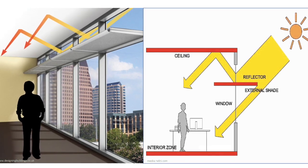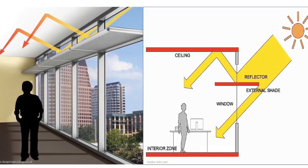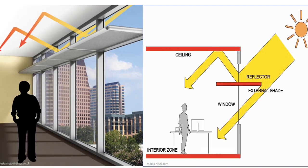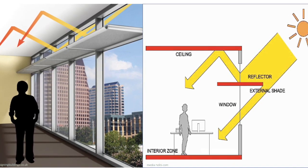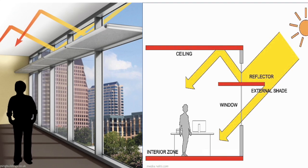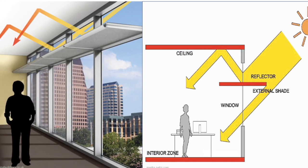A light shelf is a horizontal surface that reflects daylight deep into a building. Light shelves are placed above eye level and these light shelves reflect daylight onto the ceiling and deeper into the space.